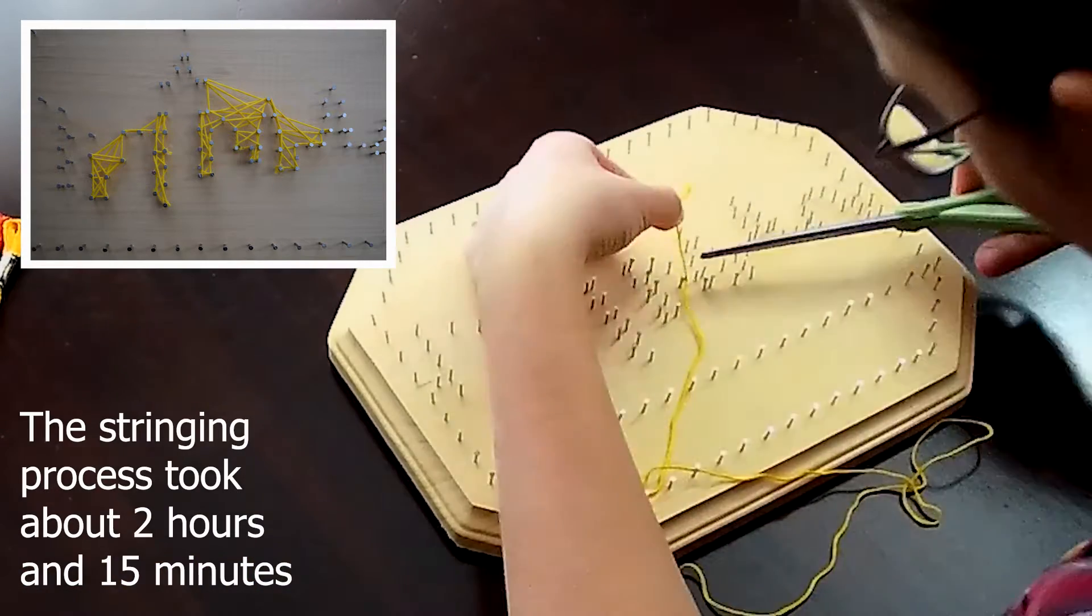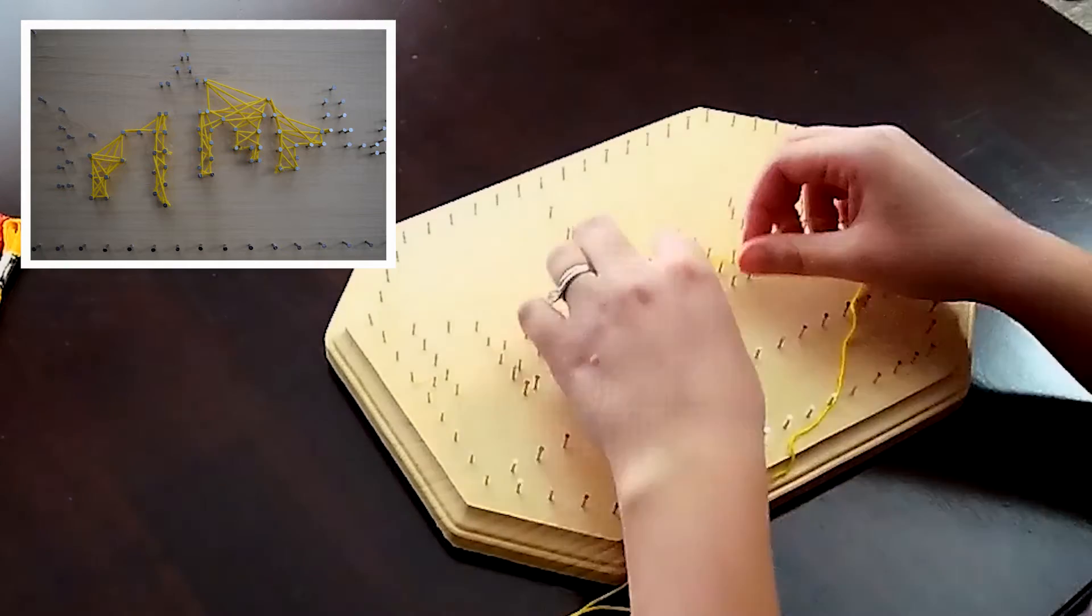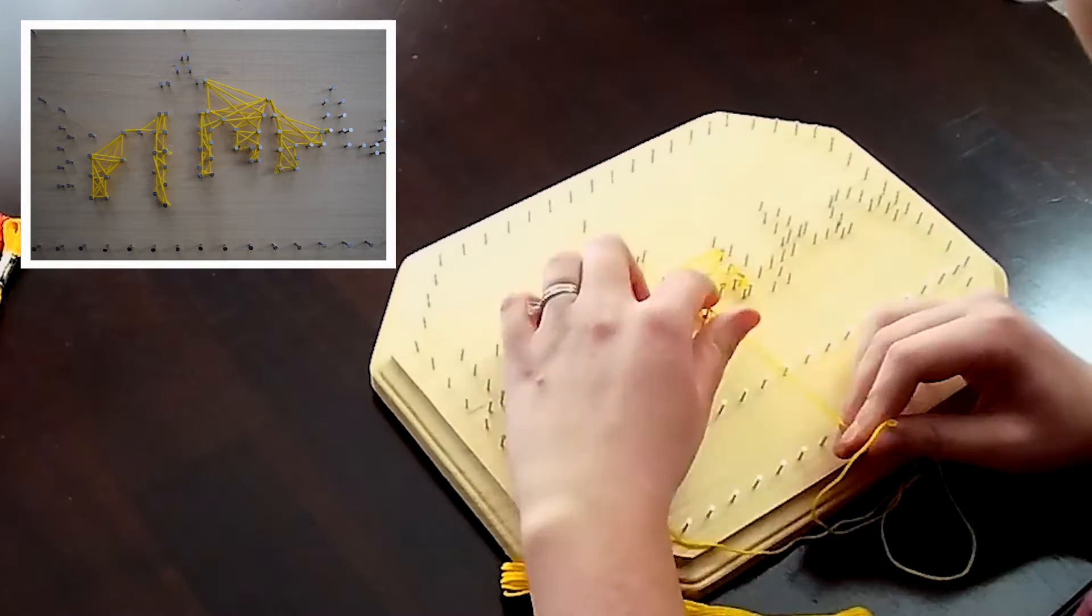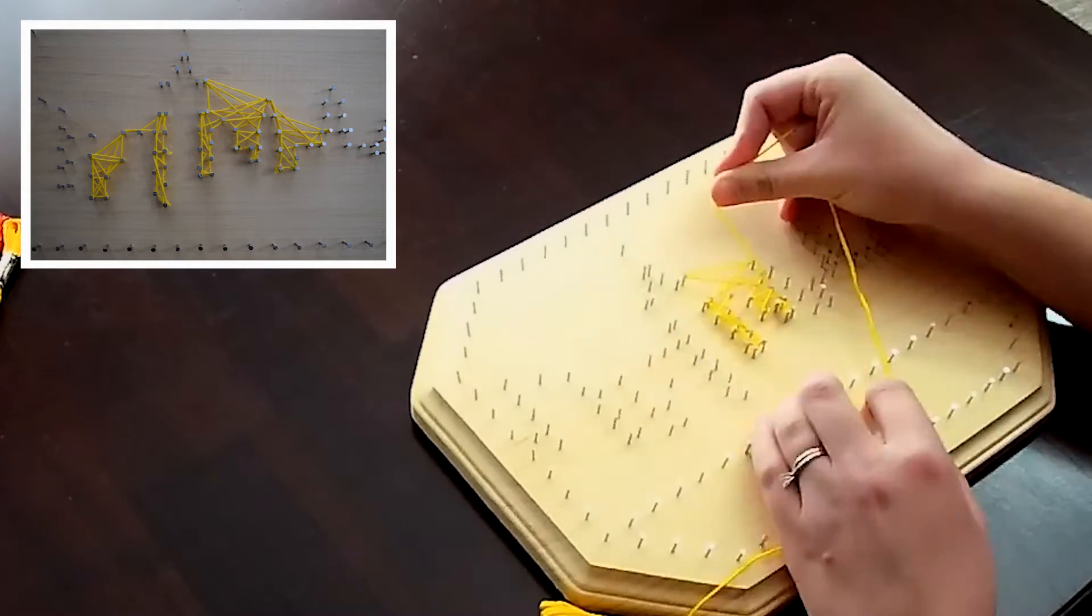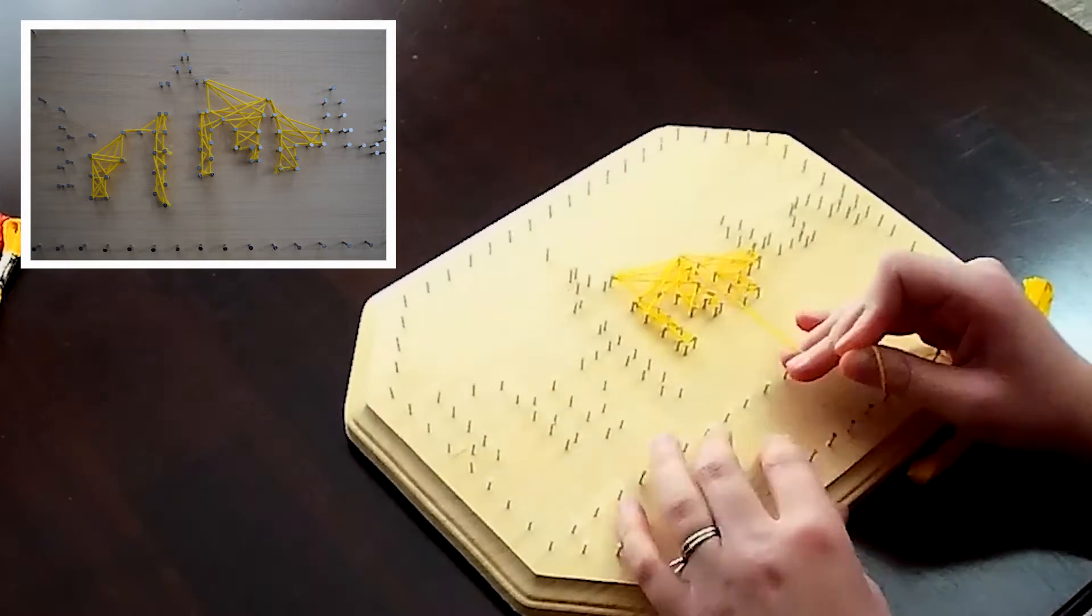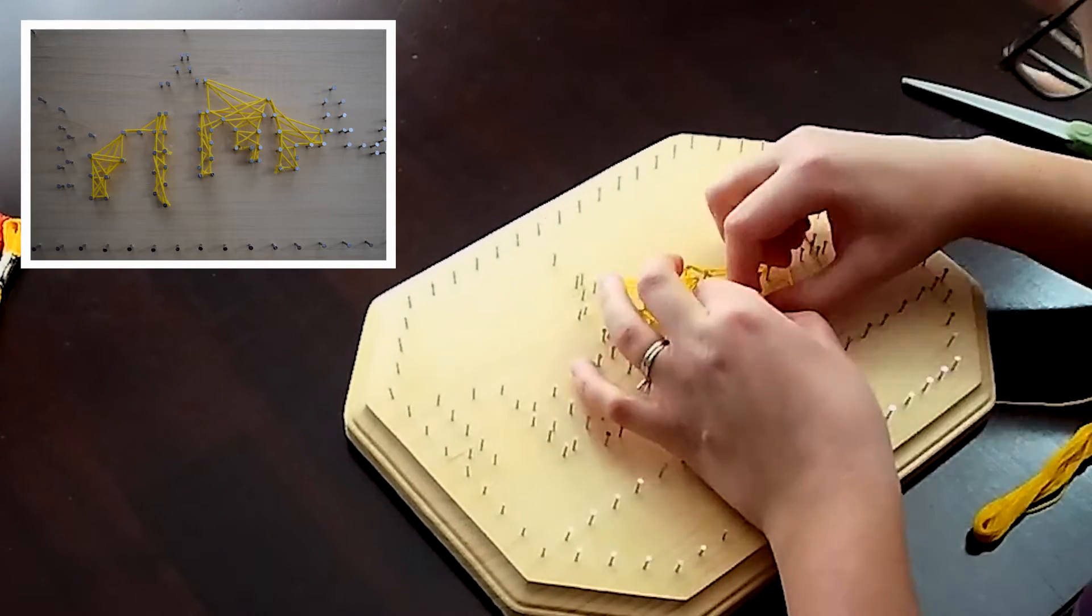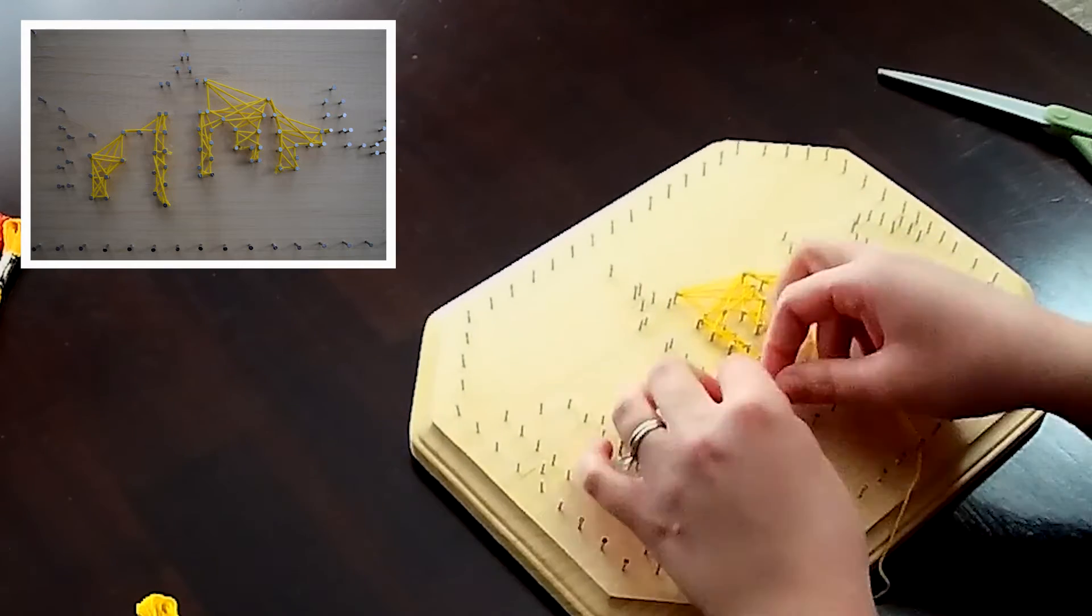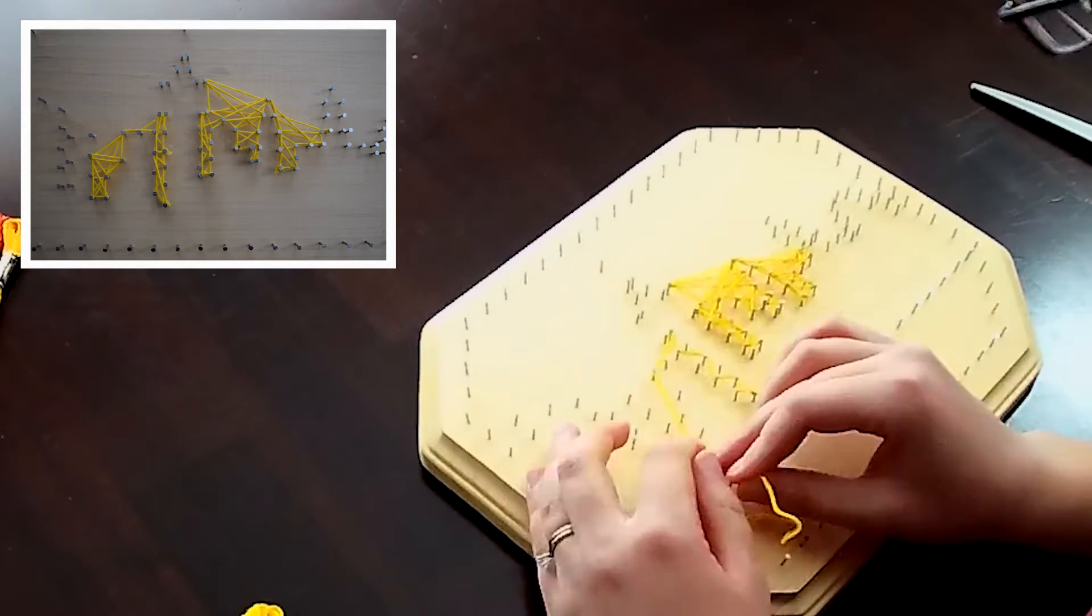I try to start and end my string at sort of inconspicuous places. So I rarely put it on an outside corner, but I'll try to start it in like the second nail in or something like that. And then I just tie it to the nail. I use a little bit of glue, or you could probably use some clear nail polish to just hold those ends of the string together, and then I cut the end pretty close to the nail head.